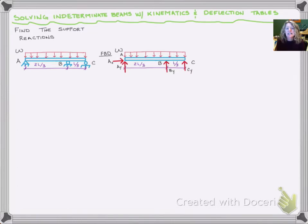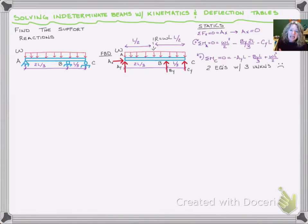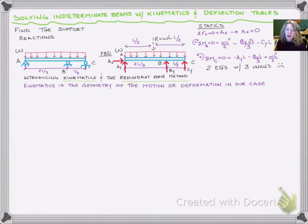We still want to do our statics, and if we start, we'd immediately see that AX equals zero. Then we can write expressions for summing moments at A and summing moments at C, but we'll get two equations with three unknowns, which is not useful for us. So we want to take advantage of kinematics to solve this problem.